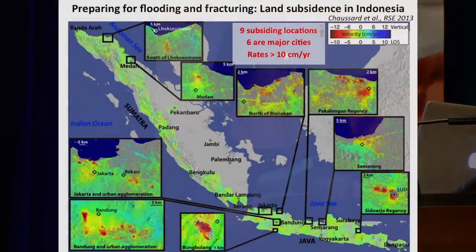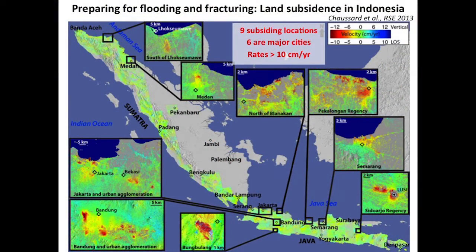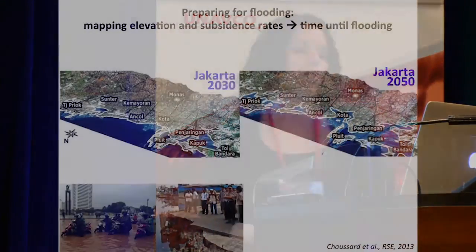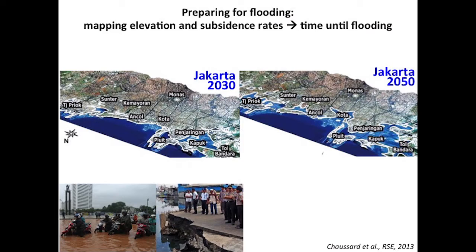Moving to hydrology, we can look at everywhere we have subsidence — and in Indonesia, it's basically everywhere. So we can look at how fast and exactly what controls the rate of subsidence. It also has major implications because we can map what is going to happen to Indonesian cities given how fast they subside. For Jakarta, we're going to be facing very large problems in the very near future due to this very fast subsidence.